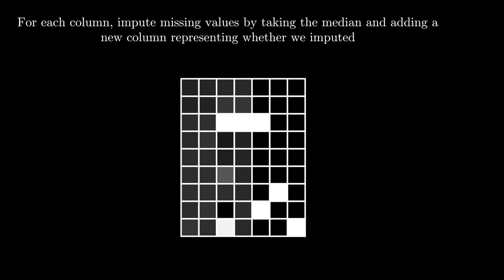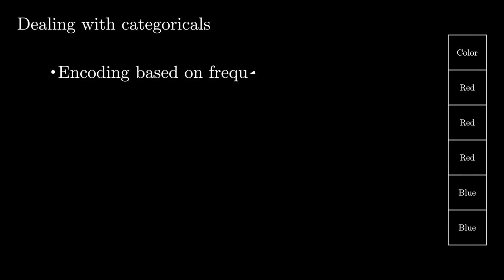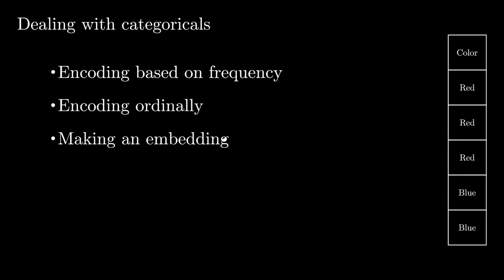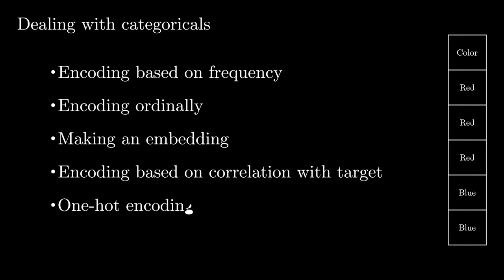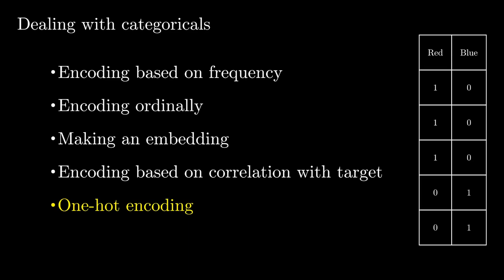Now that we fixed our missing values problem, we can move on to transforming our inputs to play nicely with neural networks. There are a number of ways to deal with categorical variables, like encoding based on frequency, encoding ordinally, making an embedding, and encoding based on the correlation of the target, and one-hot encoding. Personally, I've found one-hot encoding to be a reliable way to get strong, consistent performance.